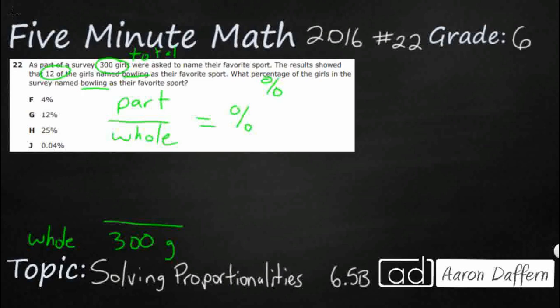Now, we only have 12 girls showing bowling, so I am going to put 12 girls. So that is a whole lot that did not like bowling. And so that is going to be our part. And so really all we need to do is to divide those two, and we are going to get percent.